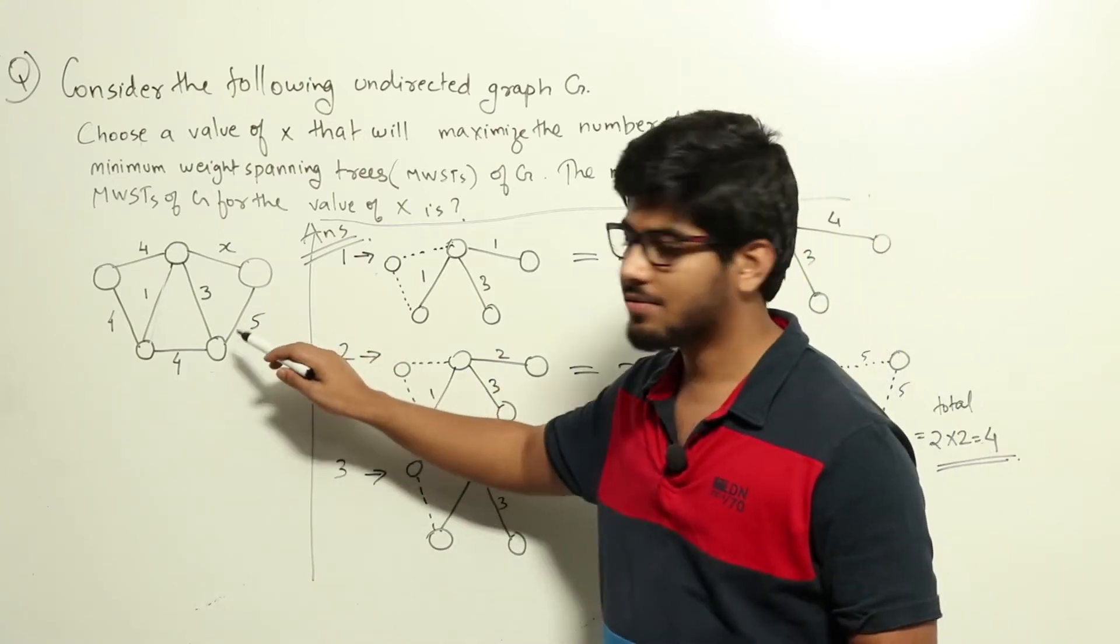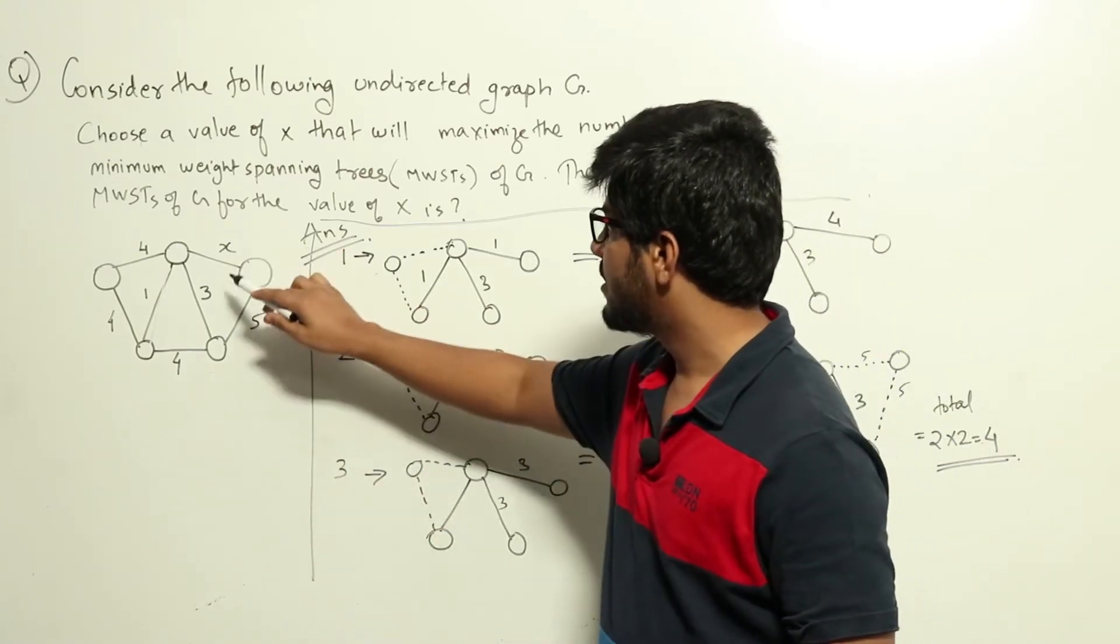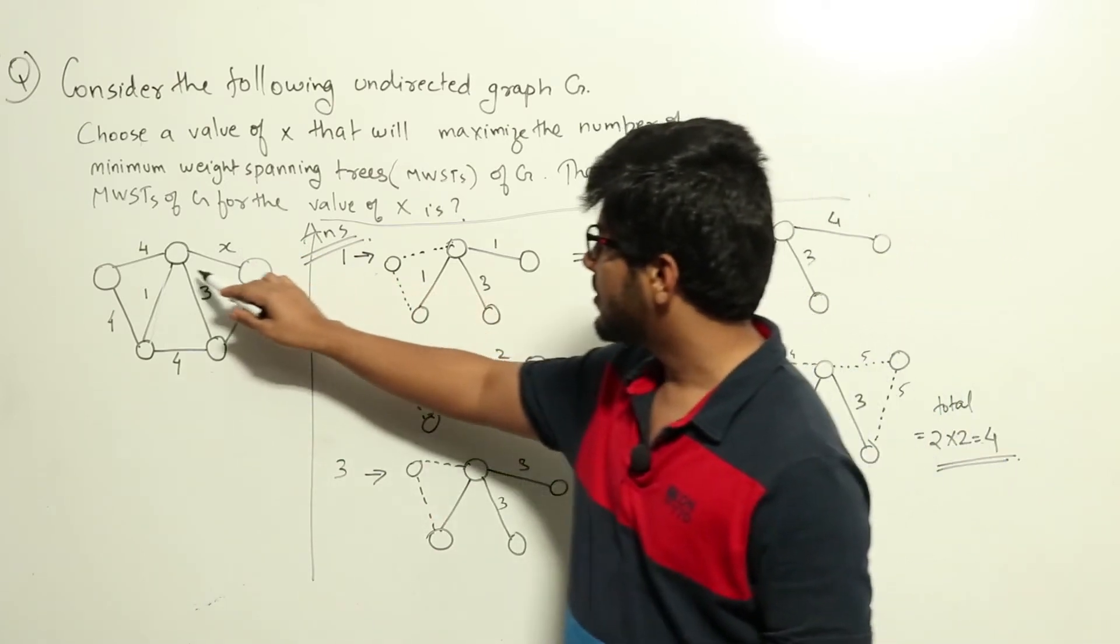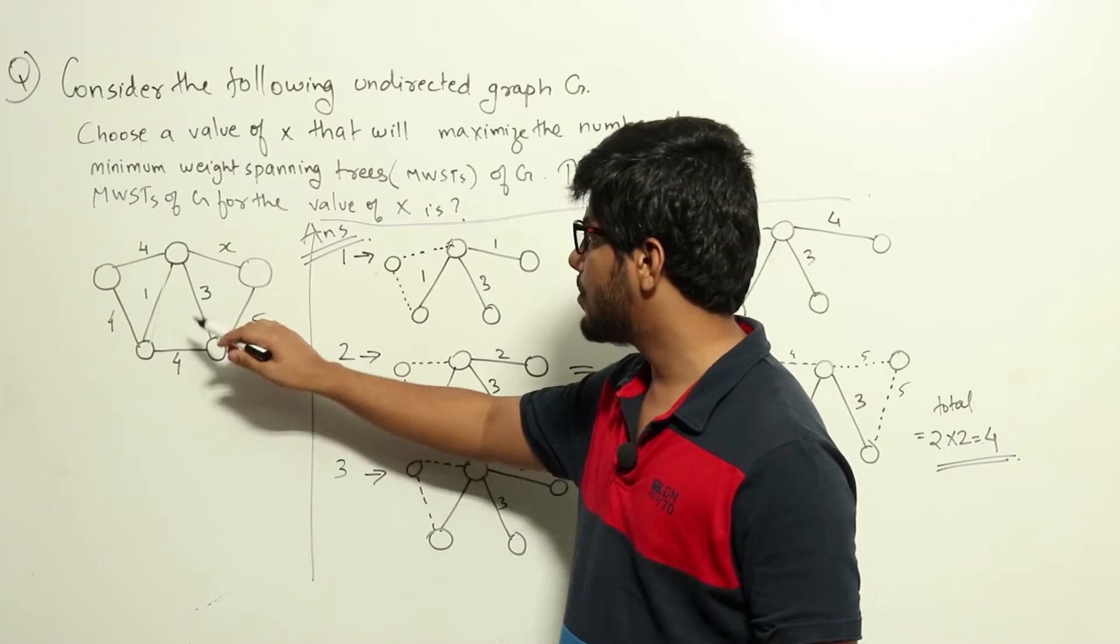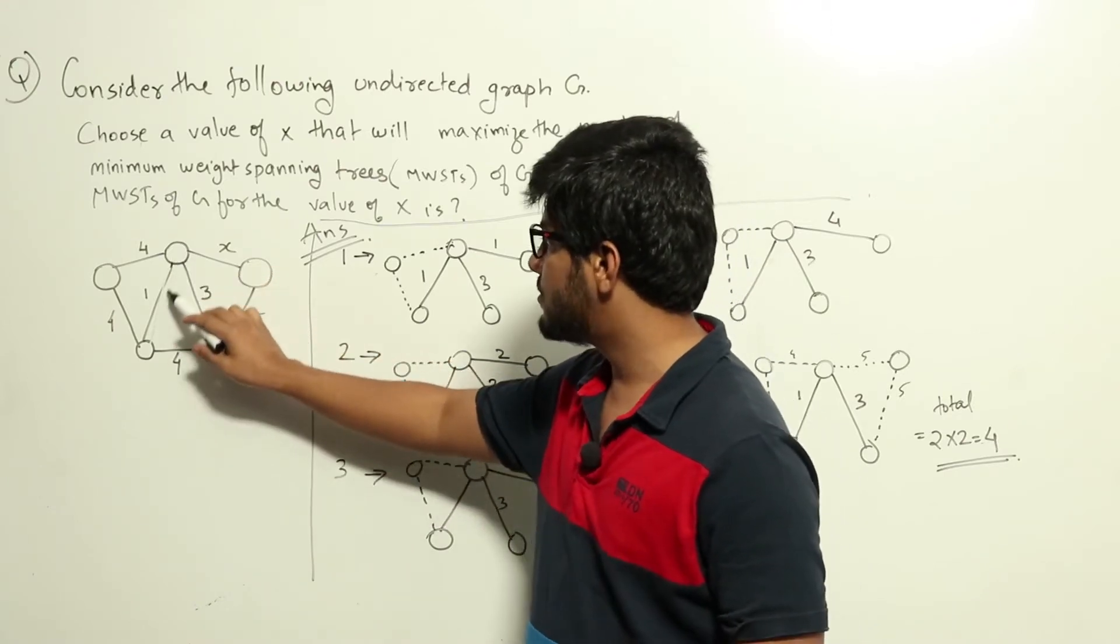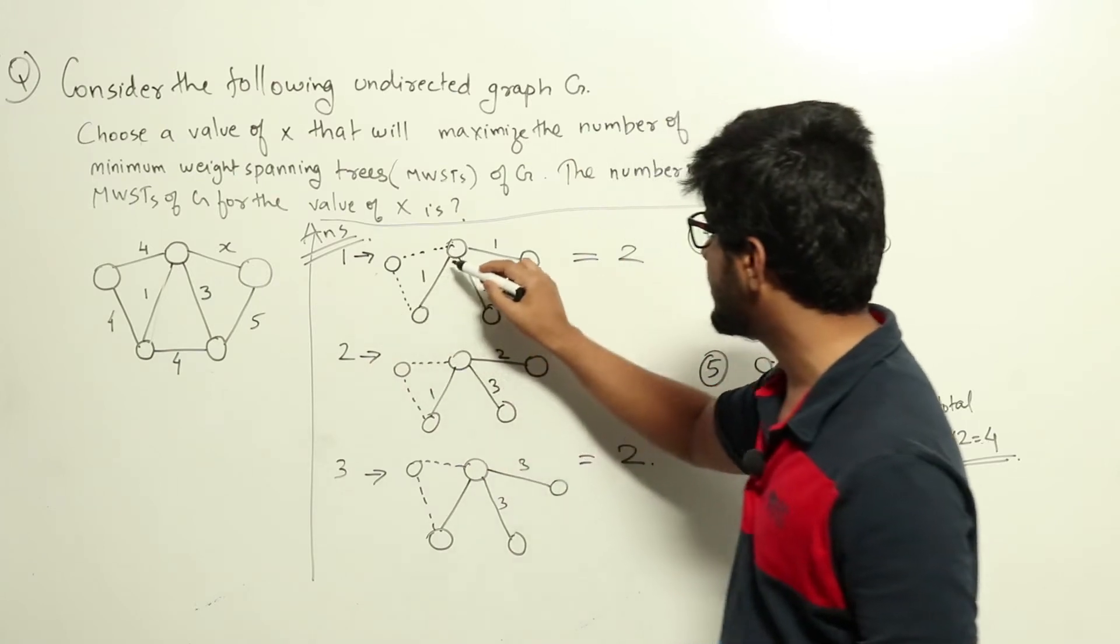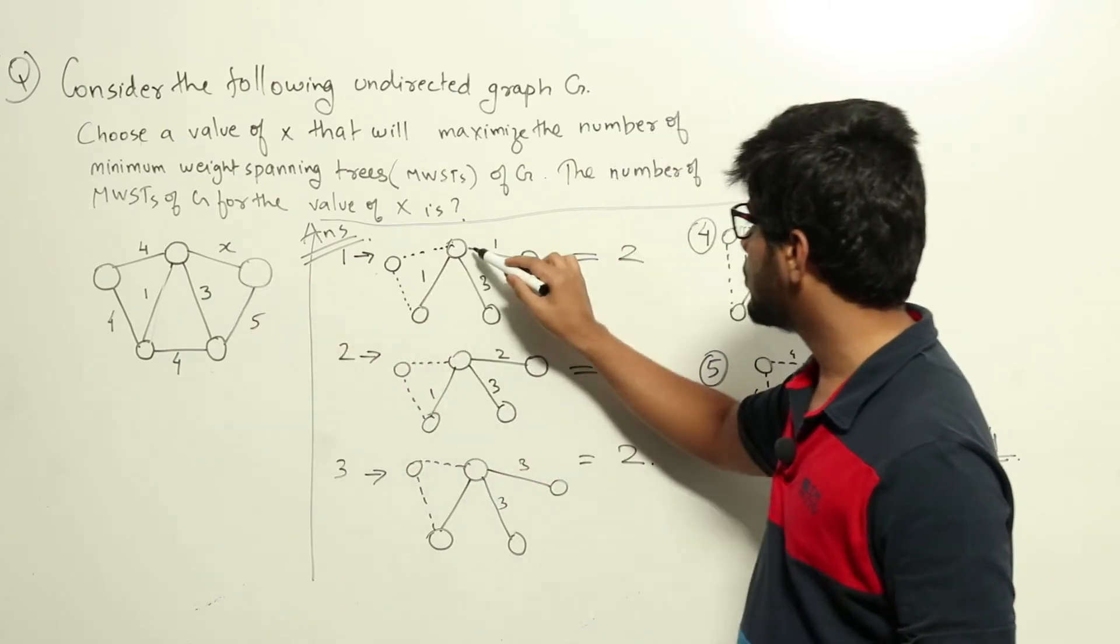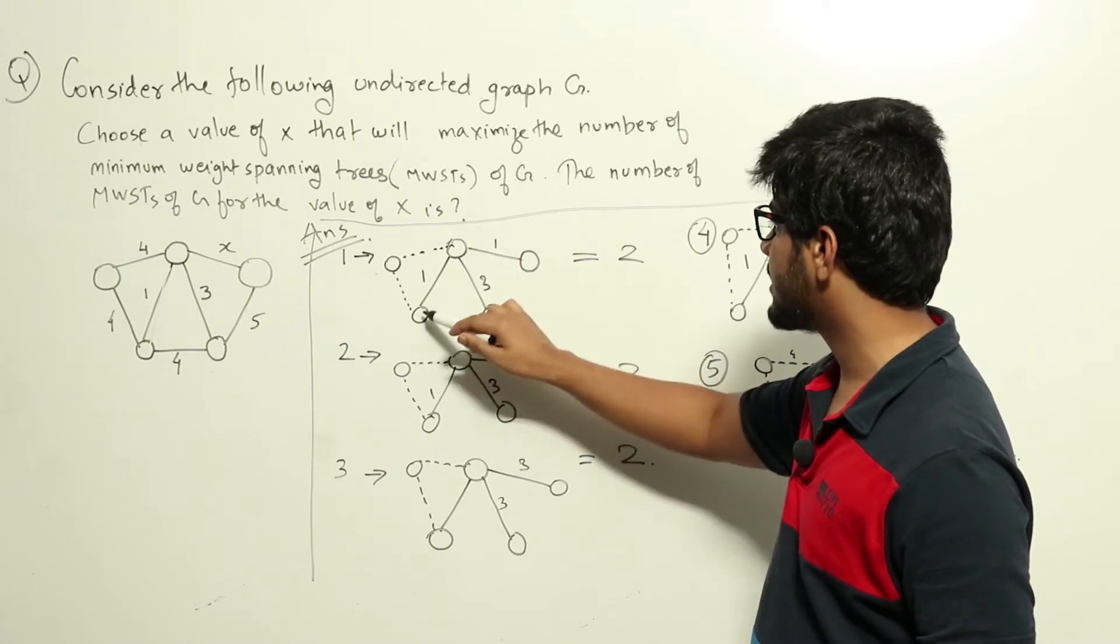So we will try by assigning X value starting from 1. Let's assume X equals 1. In that case we need to construct the spanning tree. So by Kruskal's algorithm what we will do is we will choose the edge with the smallest weight here. So that will be this edge. And the next would be this one. So both would be chosen. These are connecting different vertices.